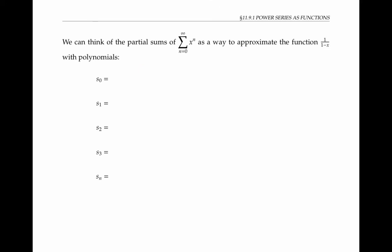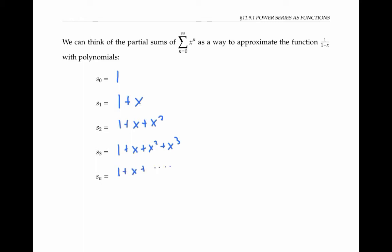We can think of the partial sums of this series as a way to approximate the function one over one minus x with polynomials. Please pause the video and write out the first few partial sums — your answers should have x's in them. S sub zero is just the zeroth term one; s sub one is one plus x; and so on. S sub n is one plus x plus all the way up through x to the n, an nth degree polynomial.